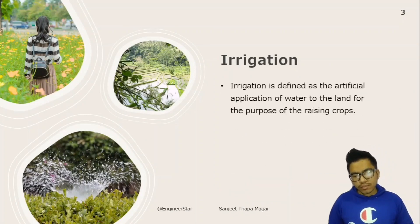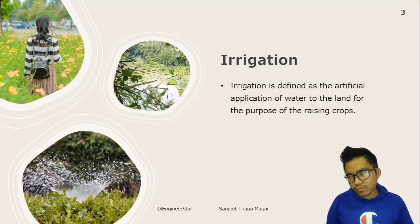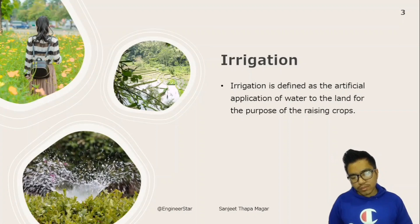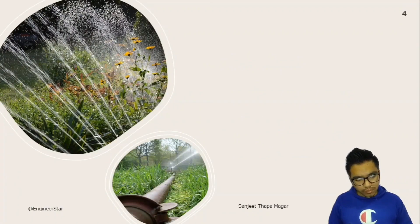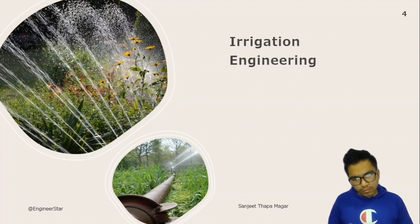Irrigation is defined as the artificial application of water to the land for the purpose of raising crops. Crops require a certain amount of water at fixed intervals throughout their period of growth.